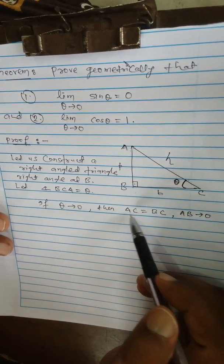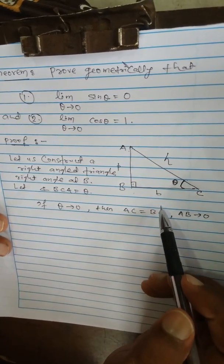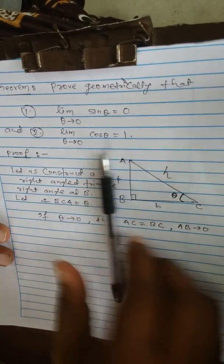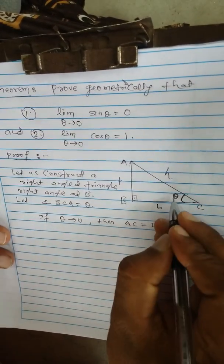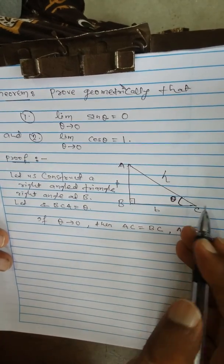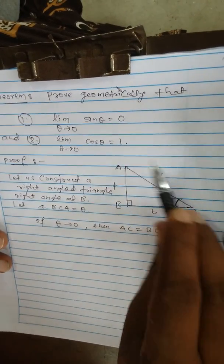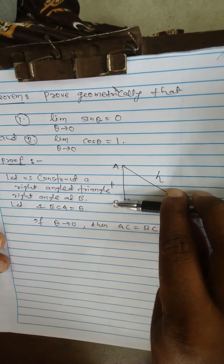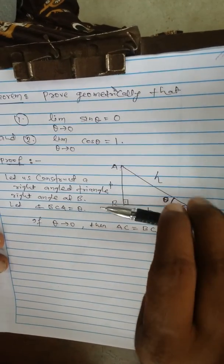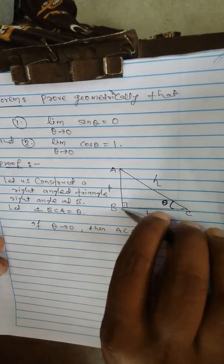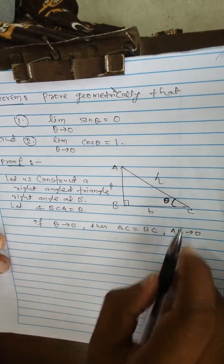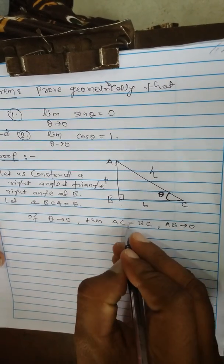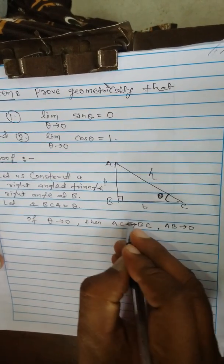As theta tends to 0, this angle C tends to 0, meaning this line almost coincides with BC. If it almost coincides with BC, then the length AC becomes equal to BC and the height AB becomes 0. So if theta tends to 0, then AC tends to BC and AB tends to 0.